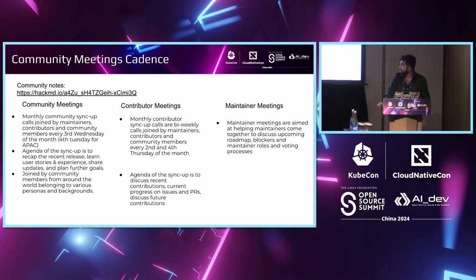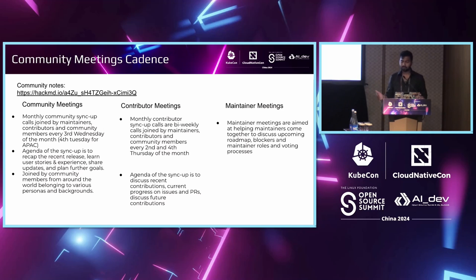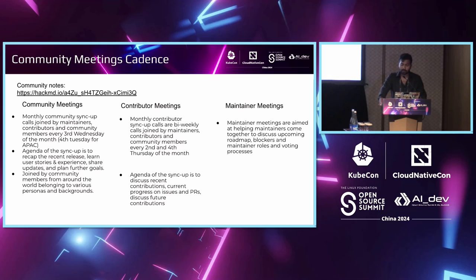This is how our community meetings cadence looks. You need community meetings happening at least once a month or once every two months. You also need separate meetings for contributors — in community meetings we discuss user stories and what's happening in the community, while contributor meetings focus on specific contributions, creating or fixing issues. Maintainer meetings are aimed at helping maintainers come together for voting processes and identifying which maintainers are active or inactive — all essential for running the overall community.